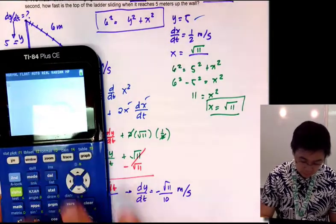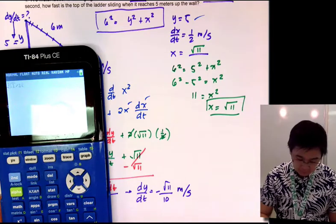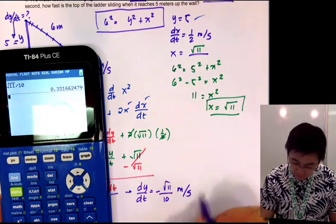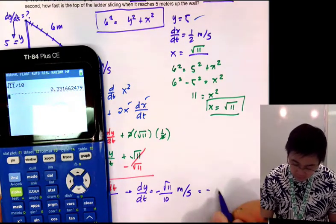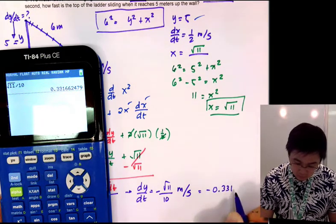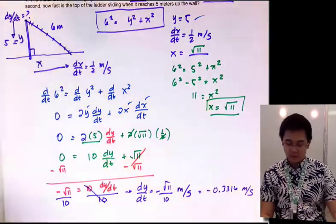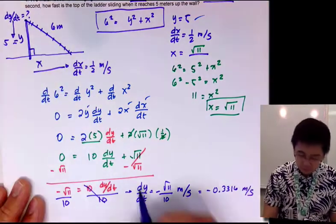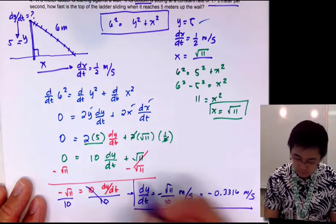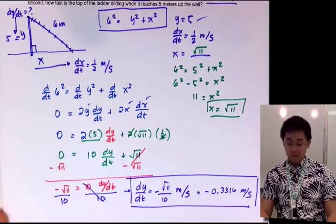Converting to decimal form, the square root of 11 divided by 10 gives approximately negative 0.3316 meters per second, which is our final answer for dy/dt.